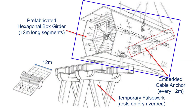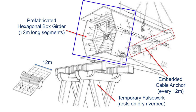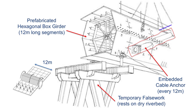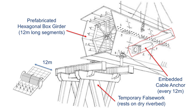This drawing shows one of the 12-meter long segments that were welded together to form the hexagonal steel box girder. Each 12-meter segment included all the necessary stiffeners and attachment plates and also included one pair of embedded cable anchors. Also shown is the temporary false work that was used to support the bridge deck from below during actual construction.